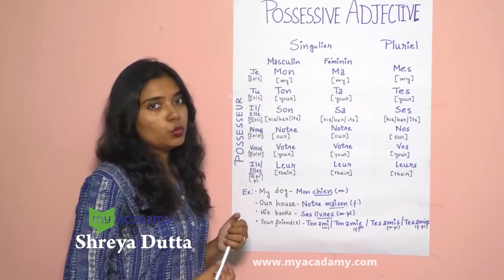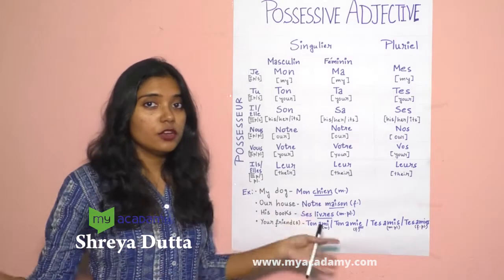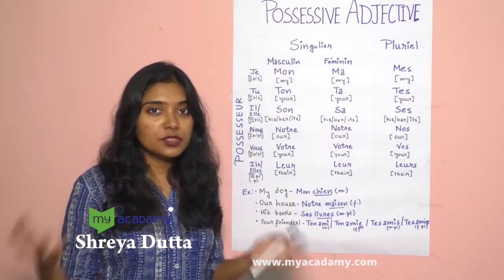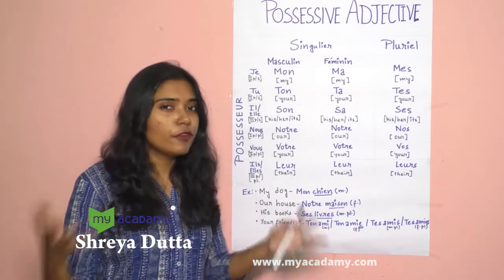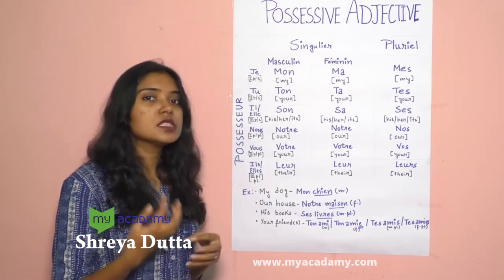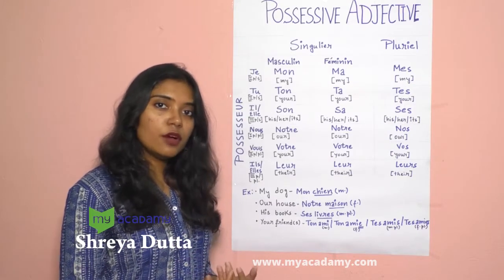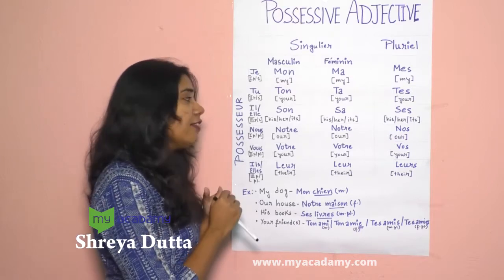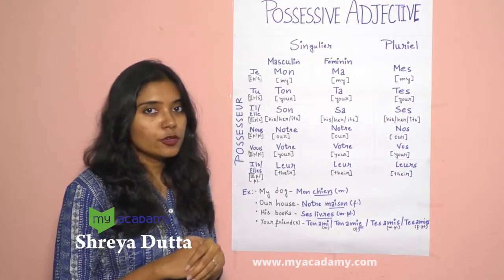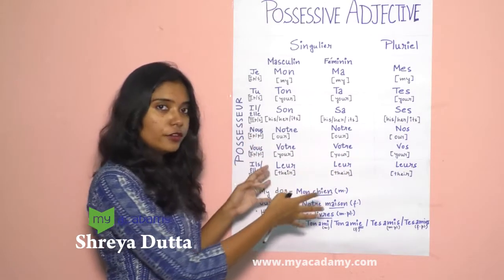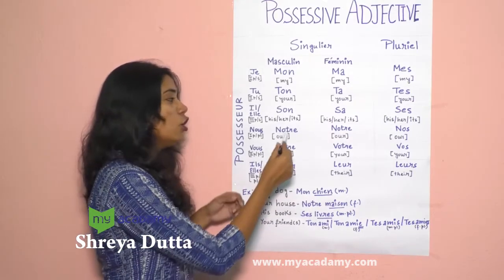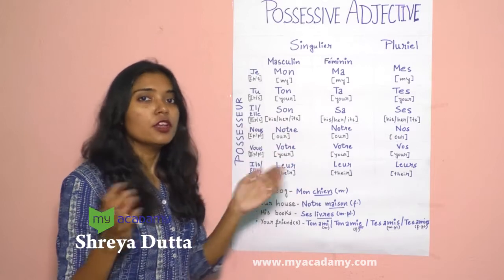Next is nous, meaning we. Anything related to us is our — our country, our pen, our classroom, our friends. For masculine singular nouns, we use notre. For feminine singular nouns, also notre — no changes. And for masculine and feminine plural nouns, we use nos. Your job is easier here because notre is the same for both masculine and feminine singular. You only need to remember two forms: notre and nos.